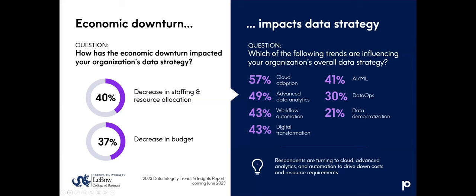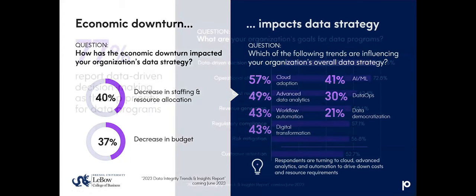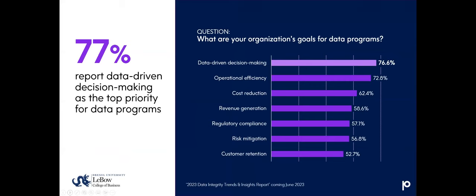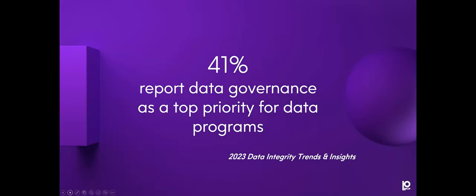According to a recent study by Drexel University's Laveau College of Business, data professionals reported significant impacts from the economic downturn, with 40% experiencing a reduction in staffing and resource allocation and 37% reporting a decrease in their budgets. But the survey also showed that they're taking steps in their data strategy to manage through these constraints. Responses show a focus on technologies that help organizations manage through resource shortages — cloud adoption, artificial intelligence, workflow automation — and prioritizing data democratization and digital transformation. These all stand out as strategies that can offset the decrease of resources and skilled workers while amplifying decision-making insights. Overall, the survey showed that organizations are shaping their data strategies to address those macro trends.